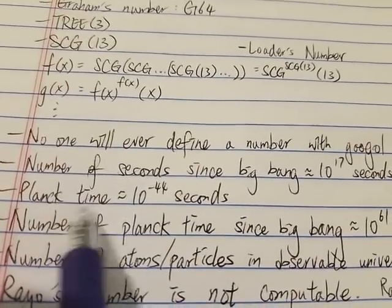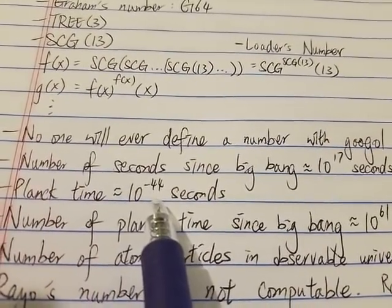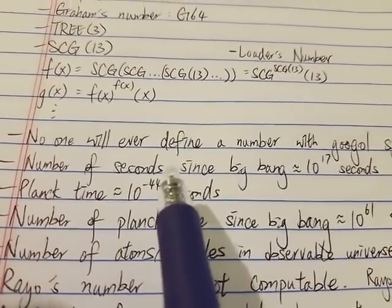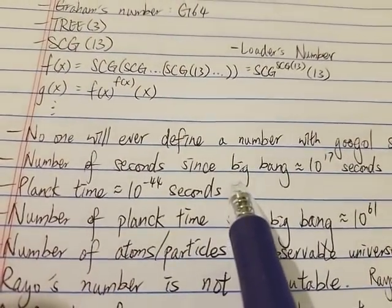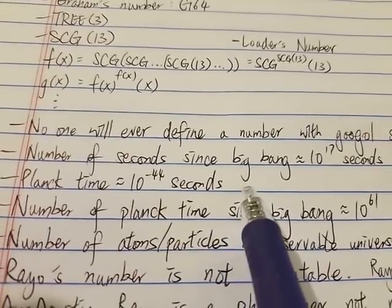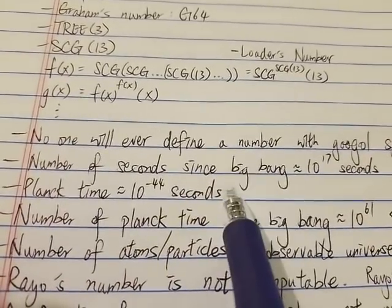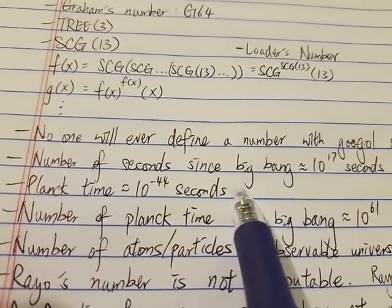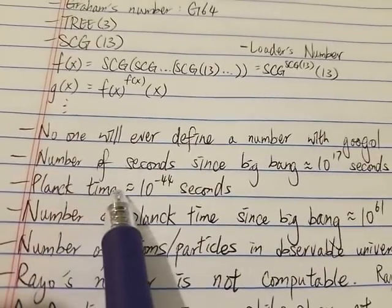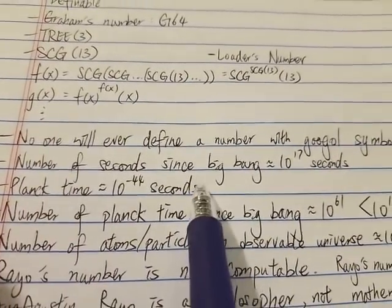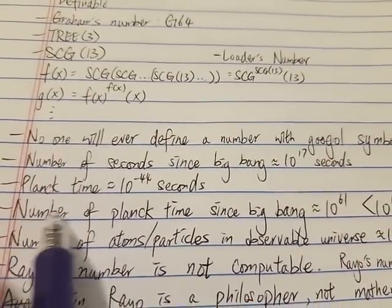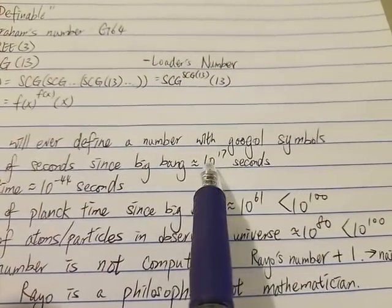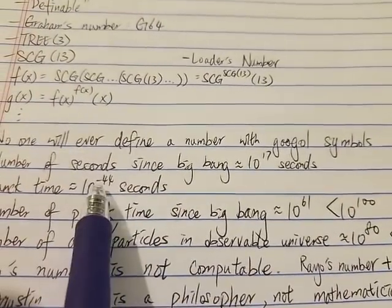And the Planck time is the smallest time scale in physics, which is around 10^-44 seconds, which is a very short amount of time. So let's see if you can write one symbol per Planck time, how many you can write since the Big Bang. So the number of Planck time since the Big Bang is equal to 10^17 times 10^44.